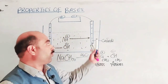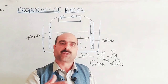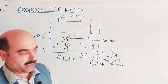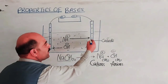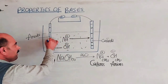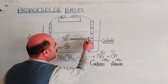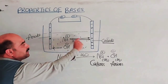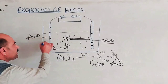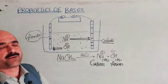The electrode connected to the positive terminal of the battery becomes positively charged and is called the anode. The electrode connected to the negative terminal becomes negatively charged and is called the cathode. Cations move toward the cathode and anions move toward the anode. That is an easy trick to remember. Thanks a lot for watching the video.